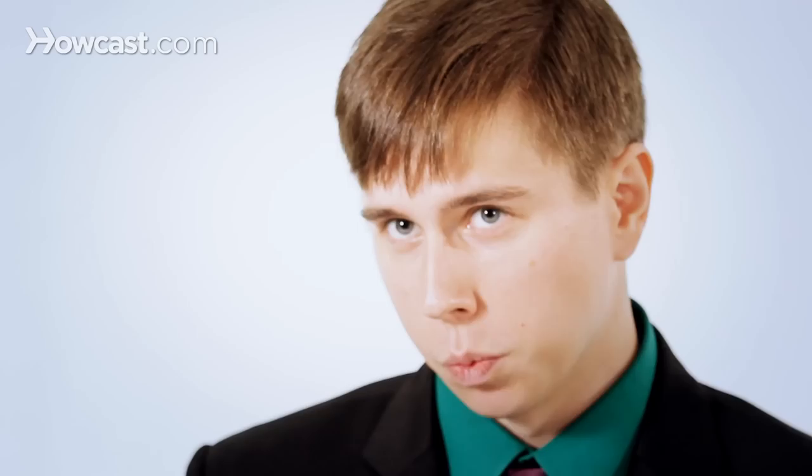To turn them over, you need a surface like this is a close-up mat, but it also works on a carpet or anything that'll have some friction. It won't really work on a table so well because it'll immediately just flip and the cards won't work.